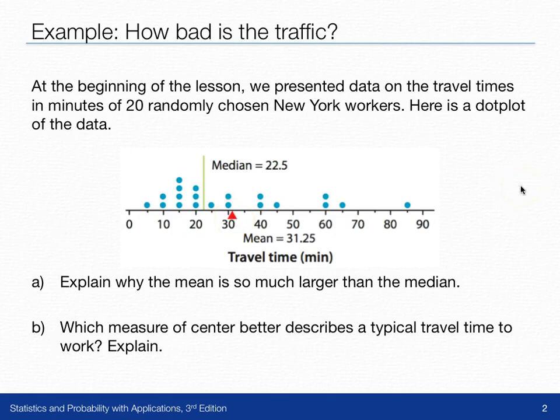Part A asks us to explain why the mean is so much higher than the median. The answer has to do with the shape of the dot plot. We can see a bunch of values clustered around here, around 10 to 20 minutes, whereas very few values are up over an hour for their commute.